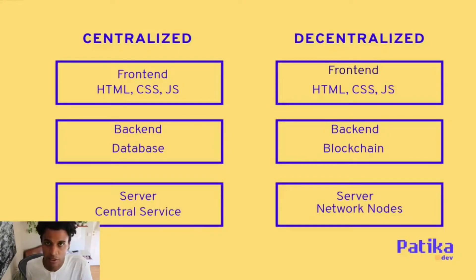On the server side, instead of having a centralized service like AWS — where you'd pay a company directly to host — we can use network nodes to deploy things like our smart contracts that get communicated with within our applications. This allows us to utilize the decentralized benefits of a blockchain right within our applications.